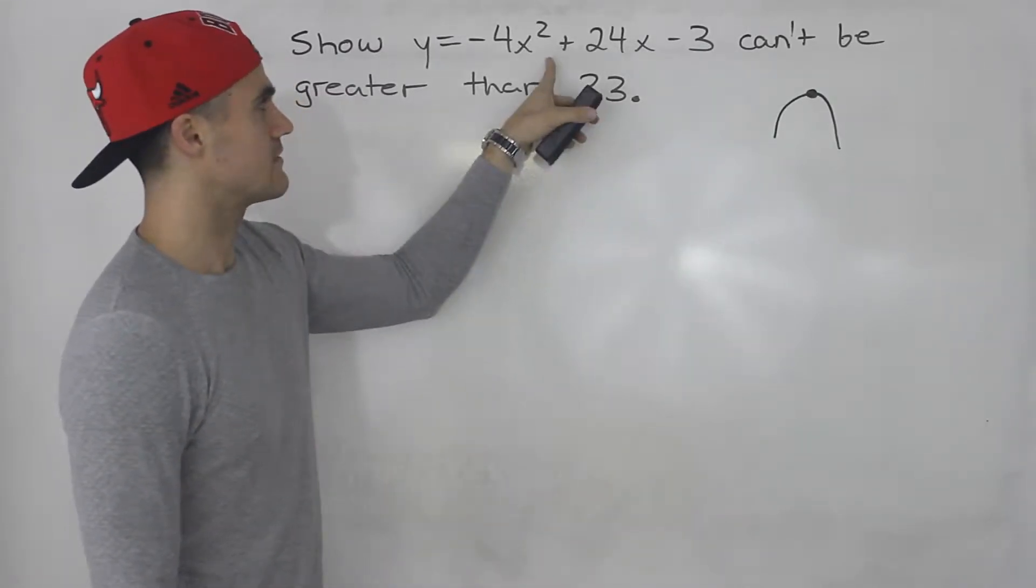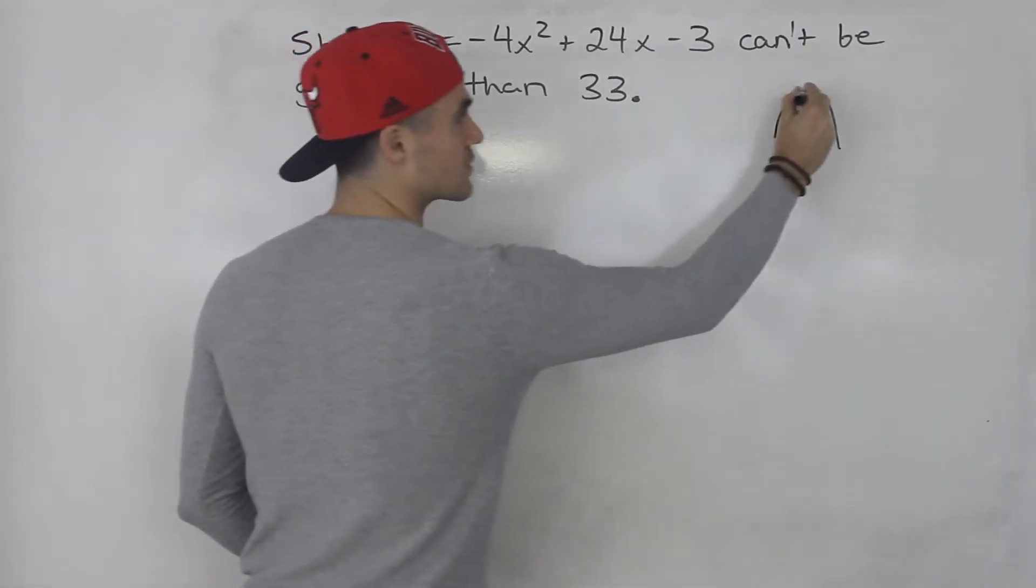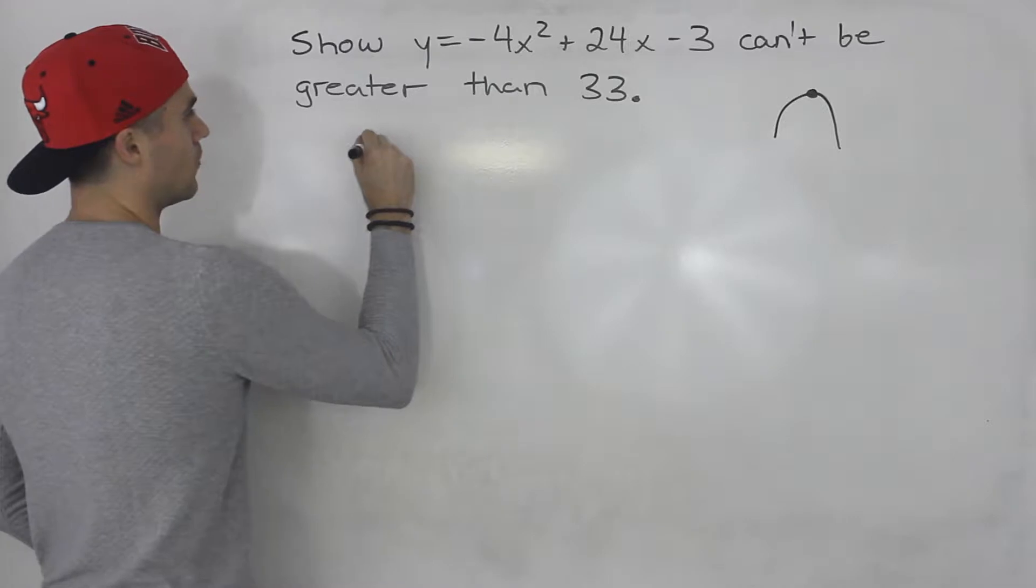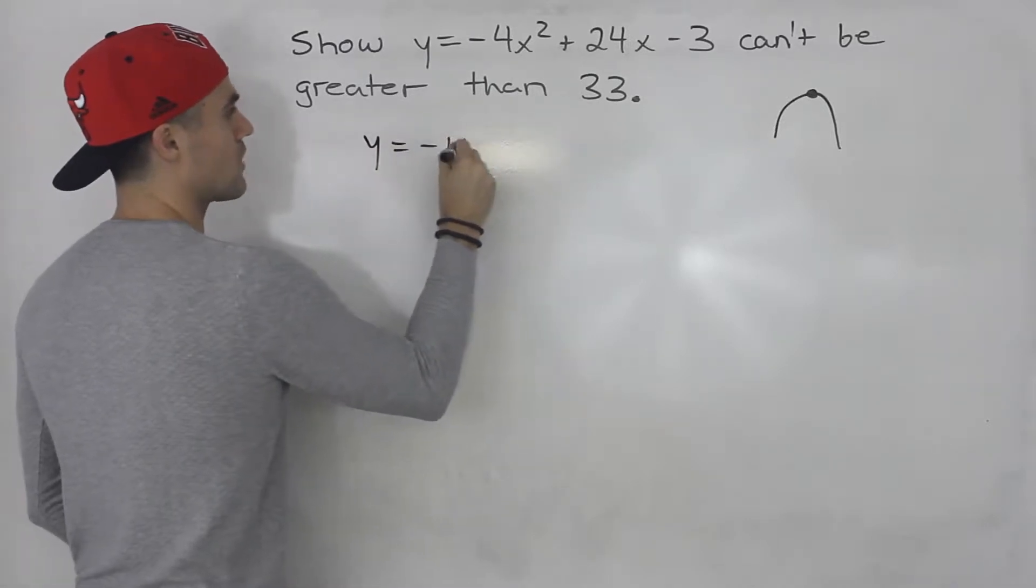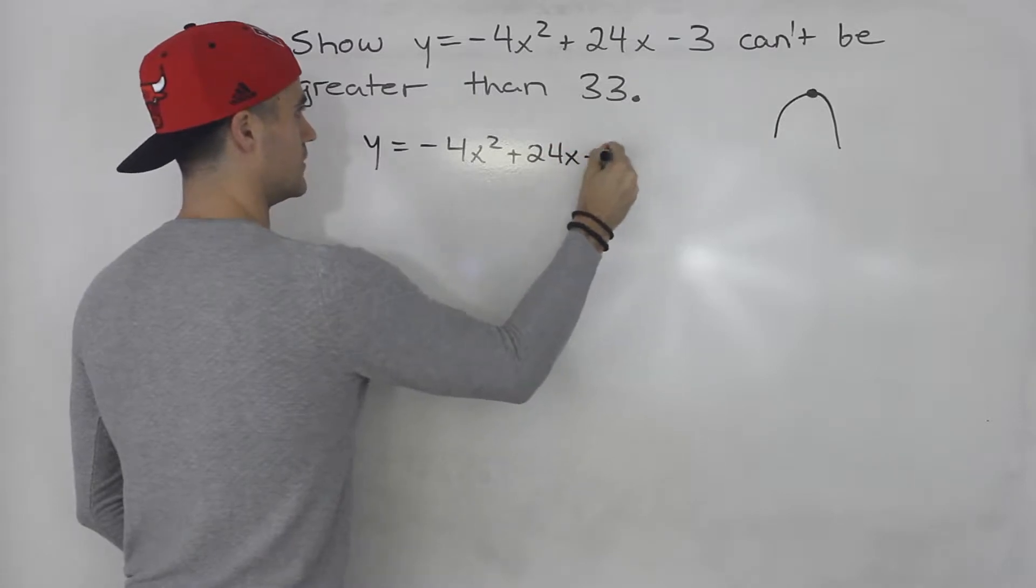What we can do is take this quadratic and put it into vertex form to figure out what that vertex actually is going to be. So we got y = -4x² + 24x - 3.